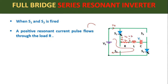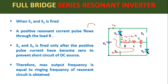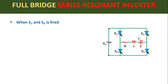The load voltage is given as V0 = I0 × R. In this full bridge series resonant inverter, the other pair of switches S3 and S4 will be fired only after the positive current pulse through the load goes to zero, to prevent direct short circuit of the DC source. Therefore the maximum output frequency equal to the ringing frequency of the resonant circuit can be obtained, because we fire the other pair of switches only when the load current pulse goes to zero.